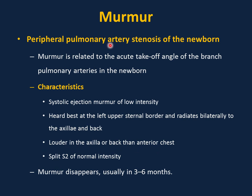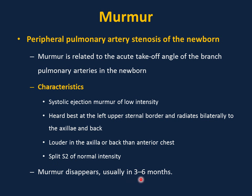Peripheral pulmonary artery stenosis of the newborn is another important innocent murmur. It is related to the acute takeoff angle of the branch pulmonary arteries — the sound comes from the branch, not the valve. Characteristics: systolic ejection murmur of low intensity, best heard at the left upper sternal border, radiating bilaterally to the axilla and back, louder in the axilla or back than the anterior chest. Split second heart sound of normal intensity. The murmur disappears usually by three to six months and requires only reassurance.